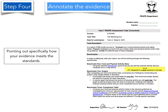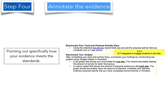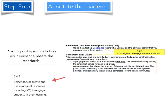Annotating really is pointing out specifically how your evidence meets the standards. On the screen there is an assessment task submitted as a piece of evidence, where the person has clearly outlined arrows pointing to the parts that meet a particular standard descriptor. There is a text box explaining: 'ICT integrated to engage students in the task.' Looking closer, the arrows point to two parts — a Google Doc and Google Sheets used to create graphs. The standard descriptor states: 'select and/or create and use a range of resources including ICT to engage students in the learning.' You can see they've used the language from the descriptor and clearly shown it on the evidence item.